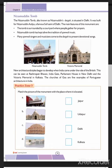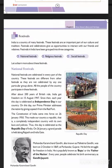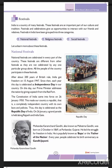New architectural styles began to develop when India came under British rule. This can be seen in Rashtrapati Bhavan, India Gate, Parliament House in Delhi, and the Victoria Memorial in Kolkata. The churches of Goa are also fine examples of Portuguese architecture in India. When the British arrived, they built things in their own style.